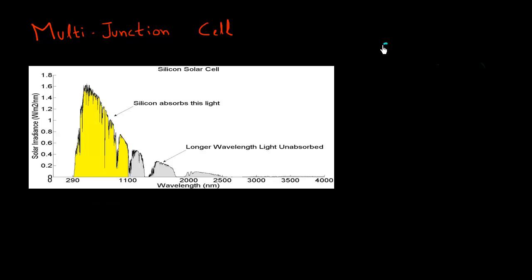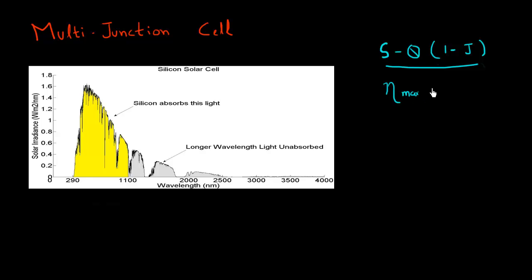In one of our previous videos, we talked about the Shockley-Queisser limit for a single junction based solar cell. This sets a ceiling on the maximum efficiency one can get out of a solar cell. This maximum efficiency turns out to be in the range of 33 to 34 percent, depending upon whether you use black body radiation or AM 1.5 spectrum to calculate this efficiency.